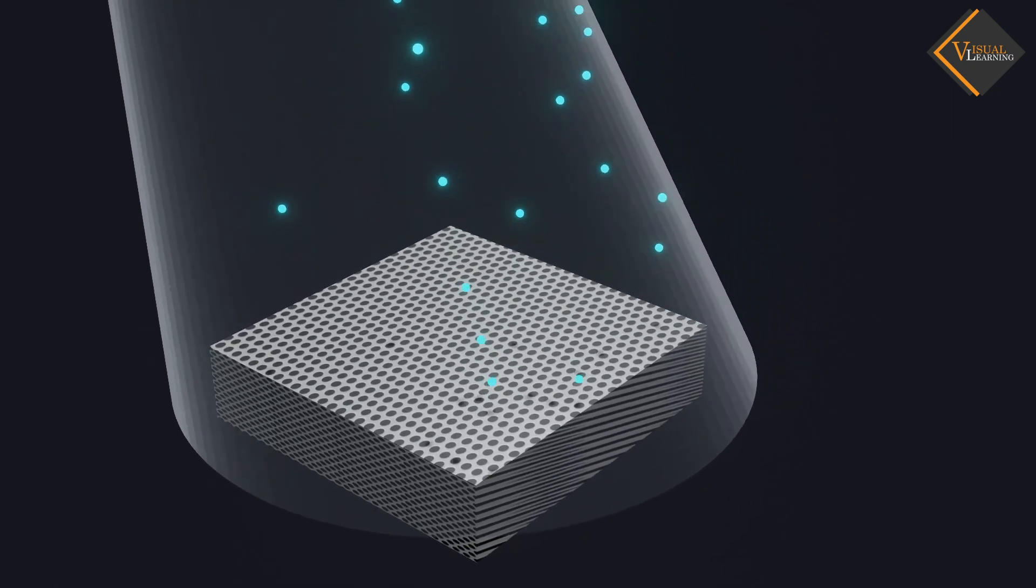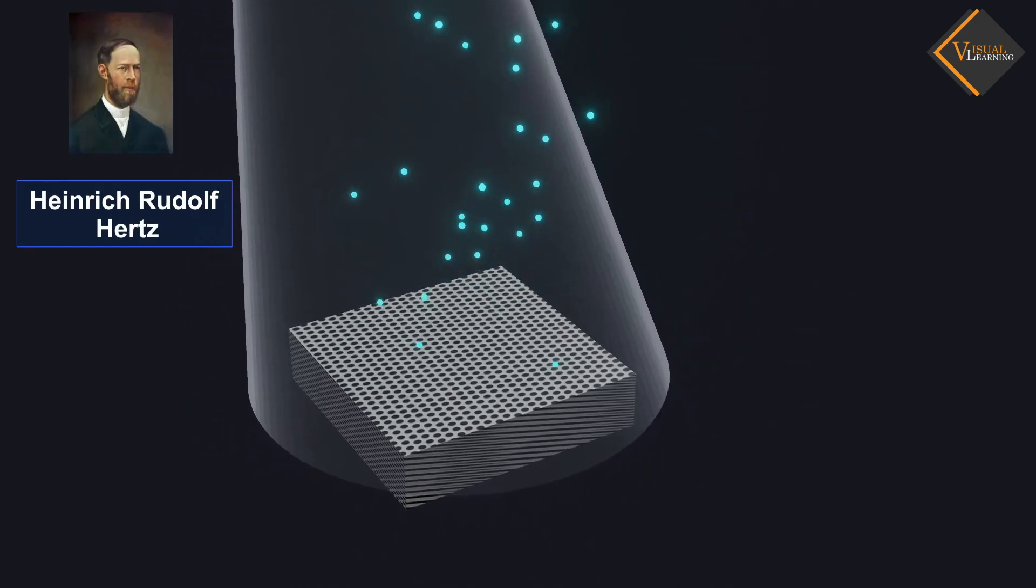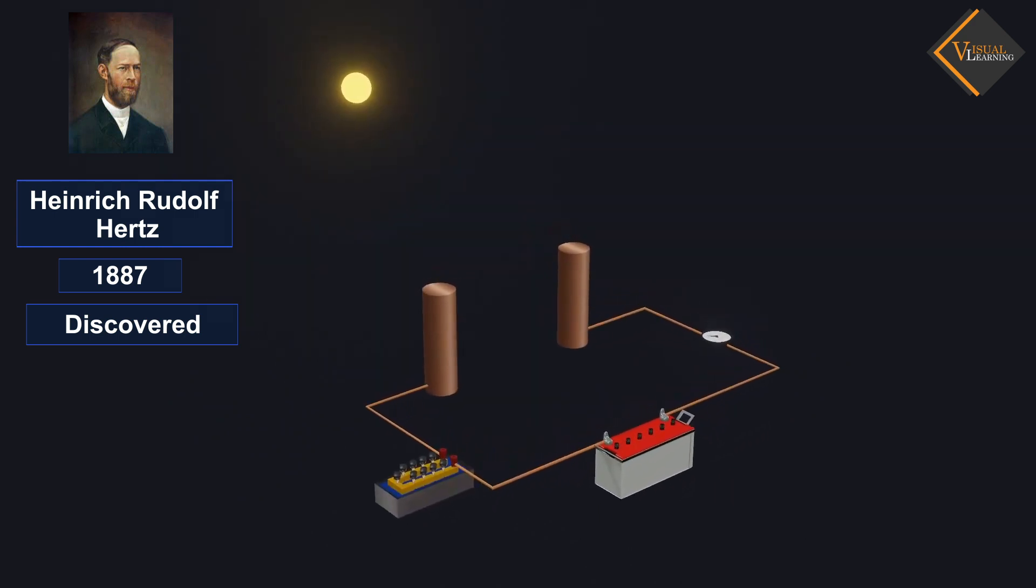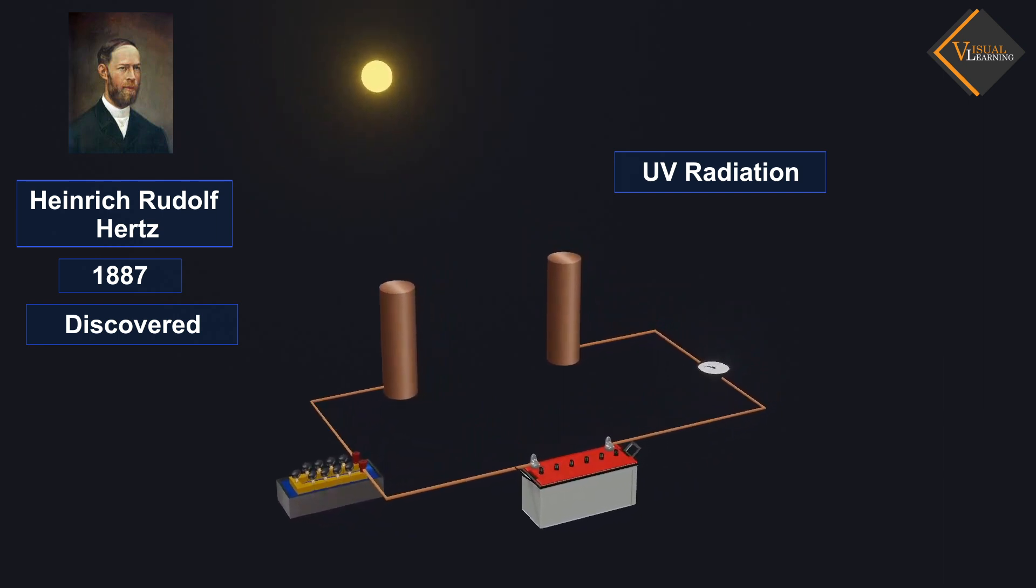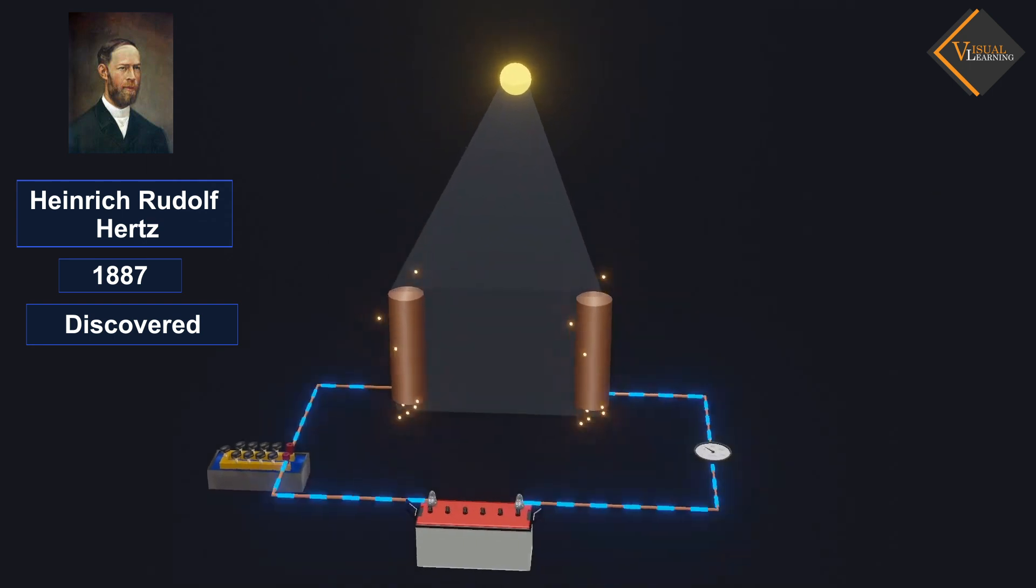This phenomenon was discovered by German physicist Heinrich Rudolf Hertz in 1887. Rudolf Hertz found that whenever ultraviolet light falls onto metal electrodes and a voltage is applied to both electrodes, sparking occurs.